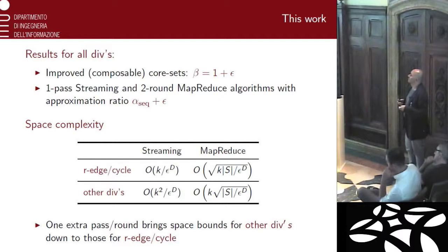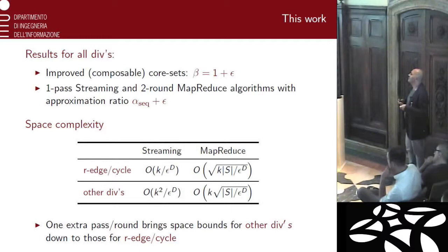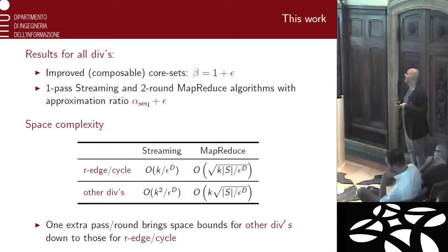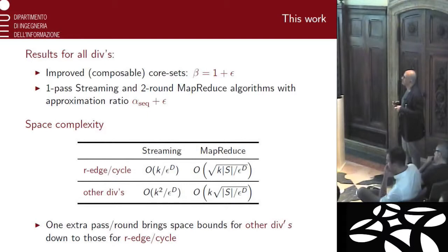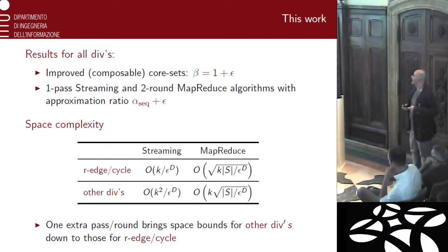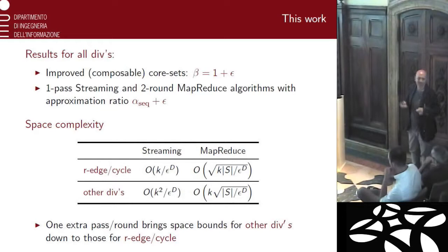We get an approximation guarantee on the streaming or MapReduce model which is almost as good as the sequential guarantee — the best we can do. The space complexity is optimal unless P equals NP for most of the problems. For two of the problems, the space needed in the streaming setting is k over epsilon to the d — if d is a constant, this is comparable to k. In MapReduce, you get sub-linear space, about square root of n. For the other diversities we have larger space, but by adding an extra pass over the streamed data or a single extra round, we can bring all the bounds to match the good problems.